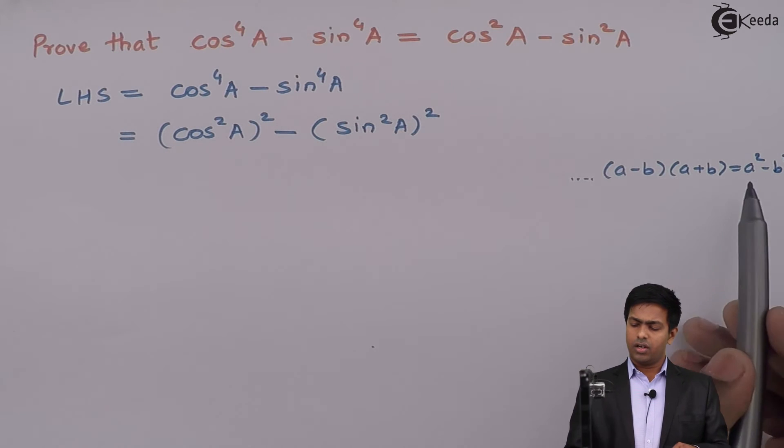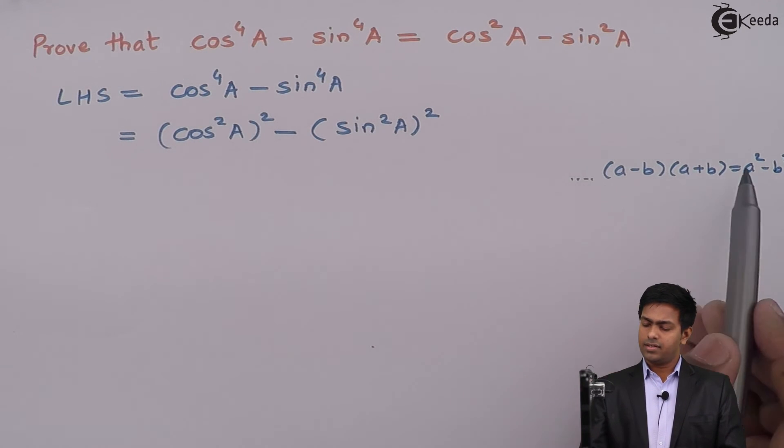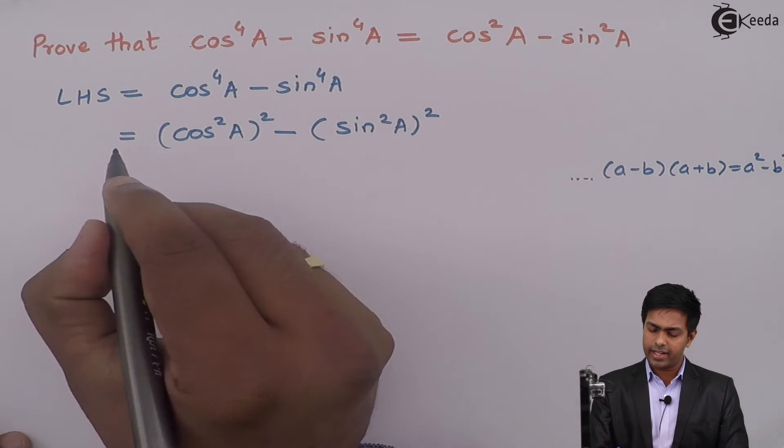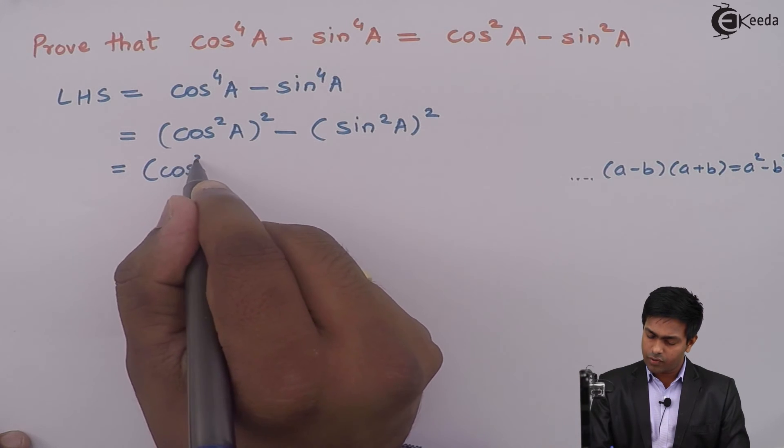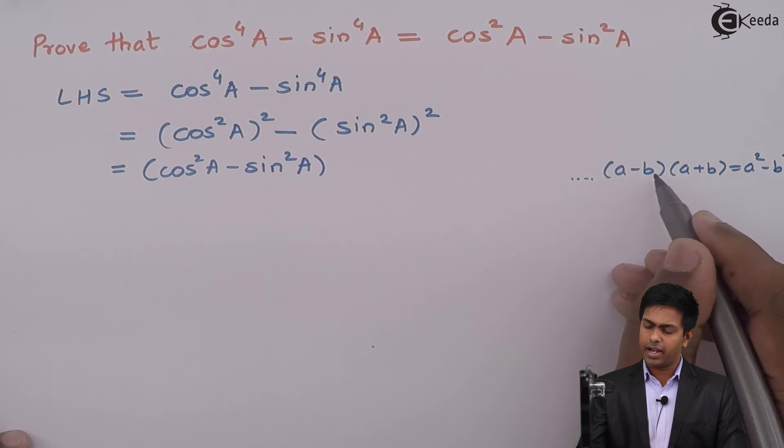So observe carefully. Here we have A square where A is cos square A minus B square where B is sin square A. So by this formula, we can say it is cos square A minus sin square A, that is A plus B.